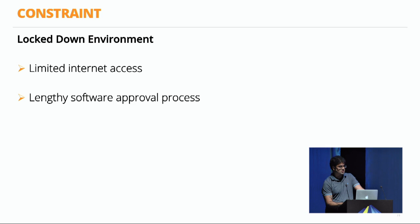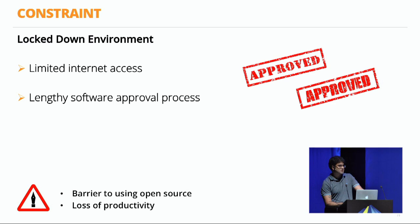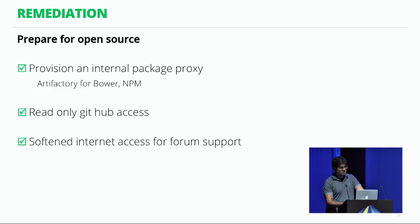Enterprises have a lockdown environment when it comes to internet access — it's often very difficult to just do an NPM install, and it will not work. There is always limited internet access and lengthy software approval processes for installing any piece of software. This becomes a barrier to using open source and results in a lot of loss of productivity. To remediate this, provision an internal package repository such as Artifactory, which supports Bower and NPM. Request read-only access to GitHub and a softened internet access, because for open source to be successful, you need good forum support.